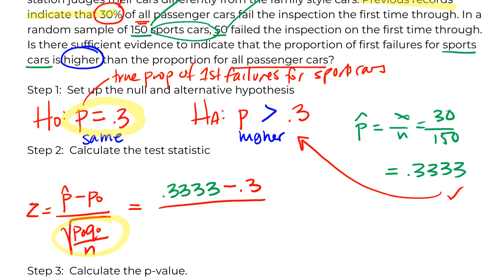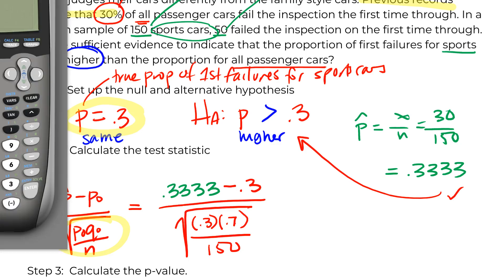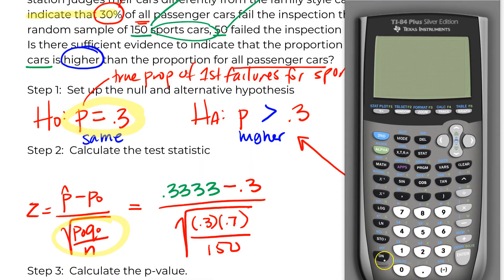Obviously it is higher, right? That's our goal. We wanted to show it's higher and it is. We do have evidence what we want to prove. But is it enough evidence? Is it different enough that we can say that sports cars are more likely to fail, or have a higher proportion of first failure rates?